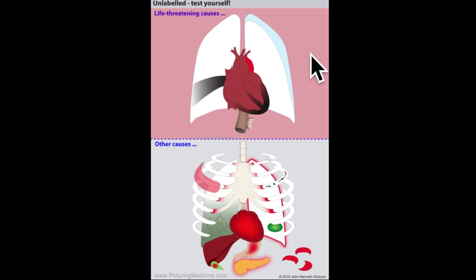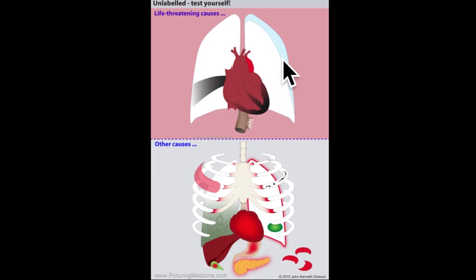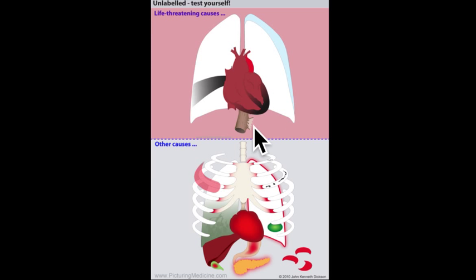The first acutely life-threatening causes are: pulmonary embolus within the lung, tension pneumothorax, aortic dissection of the aorta, myocardial infarction, and esophageal rupture.